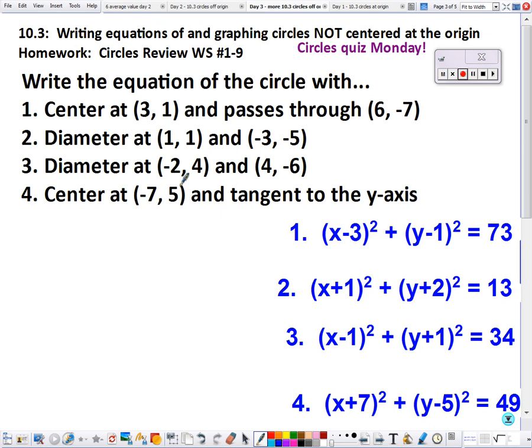That's 2² plus 3² we get 13 is our radius squared, so we fill that in here. For number three, the diameter goes through these two. If the diameter has the endpoints of these two coordinates, then the center is in the middle again.